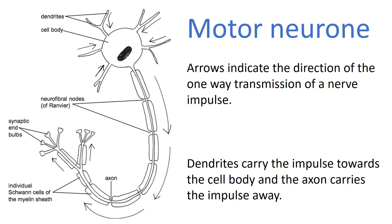Motor neurons carry information from the central nervous system out towards the peripheral nervous system, because it's the peripheral nerves that communicate with muscles to facilitate movement. Motor neurons are always carrying information out from the CNS to the PNS — information exiting the central nervous system. For this reason we call motor neurons efferent neurons. Efferent means going from the central nervous system into the peripheral nervous system. Motor neurons are located in efferent pathways — bundles of motor nerve fibers in larger structures called nerves, carrying information from the CNS out towards the PNS.